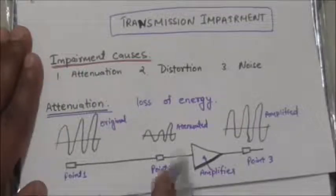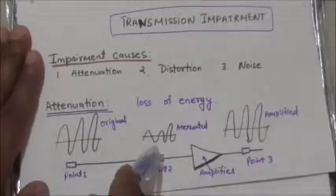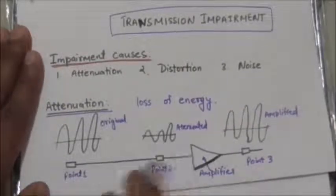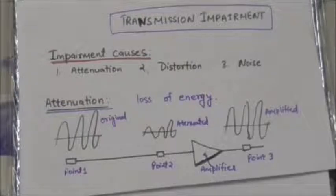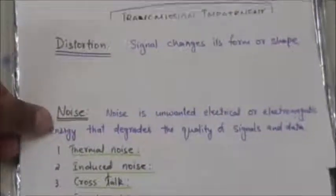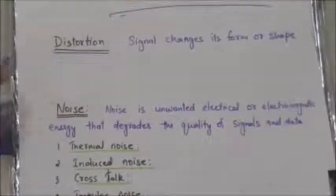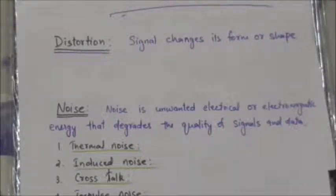As you can see here in this diagram, amplifiers are used to restore the signal after energy loss. Next is distortion. Distortion means the signal changes its form or shape.